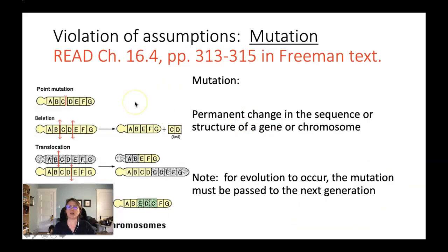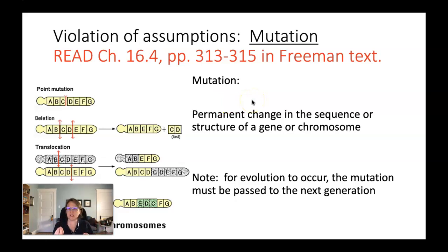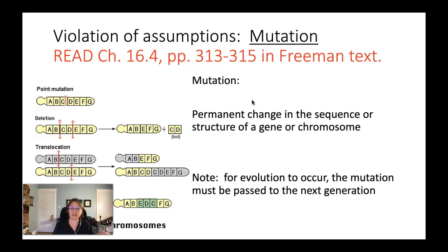We're going to start today talking about mutation, which is in some ways the least important and in some ways the most important force of evolution. Mutation can be defined as a permanent change in the sequence or the structure of a gene or a chromosome — a physical change to the nucleic acid. For evolution to actually work, that mutation has to be passed on to offspring; otherwise it's just a change in the individual.